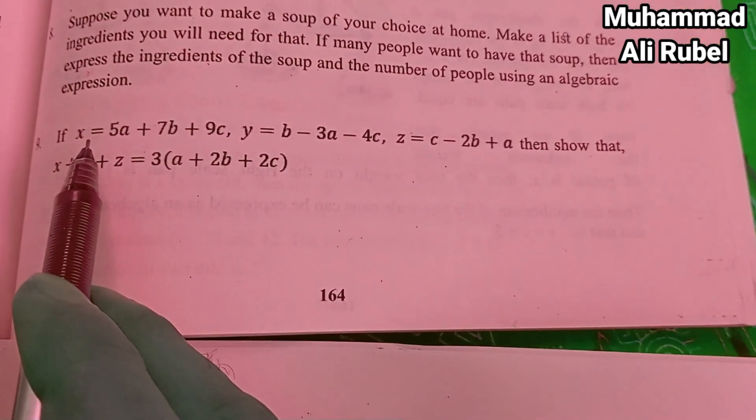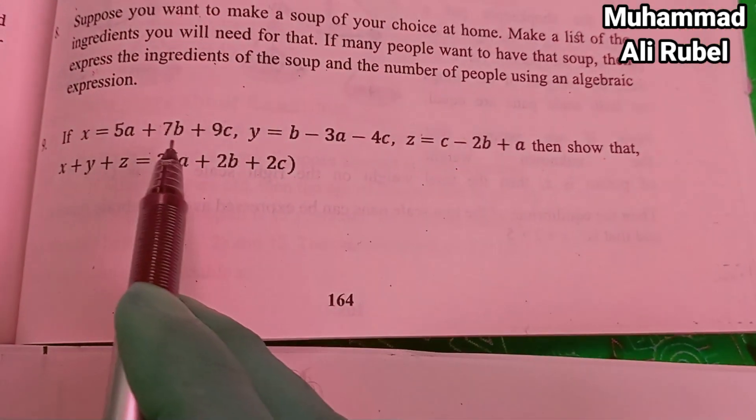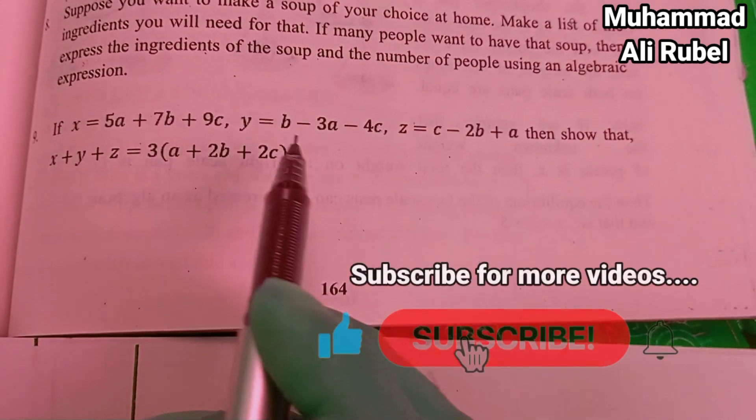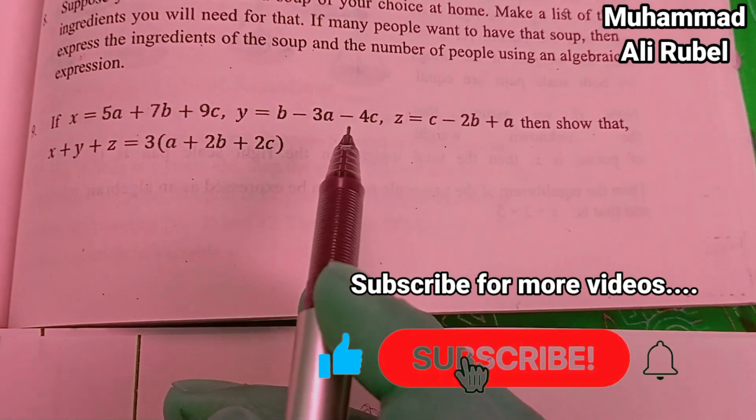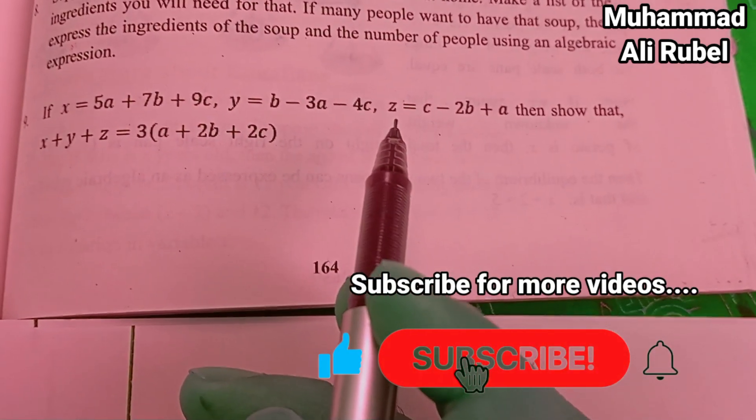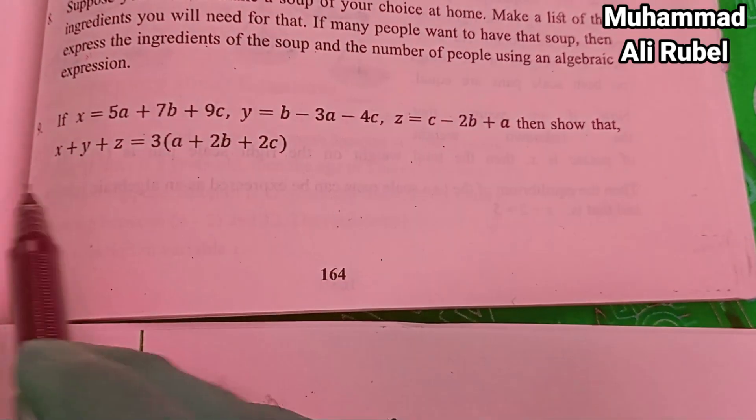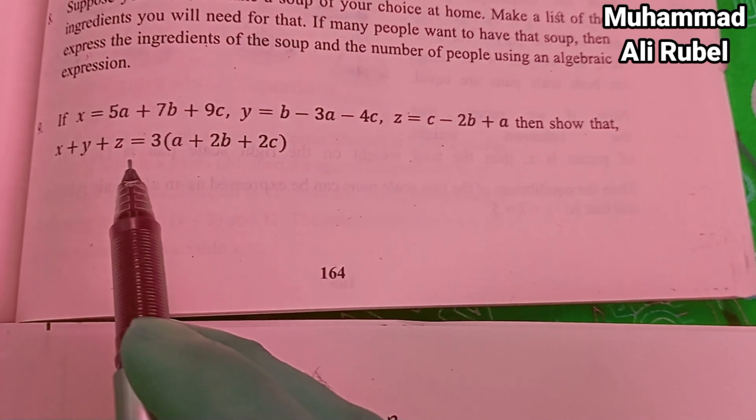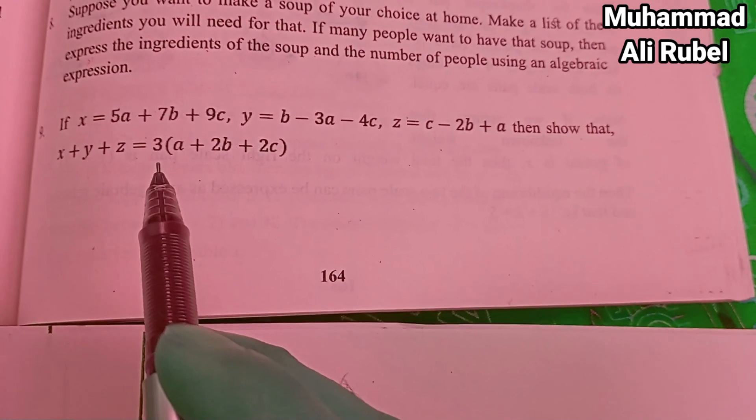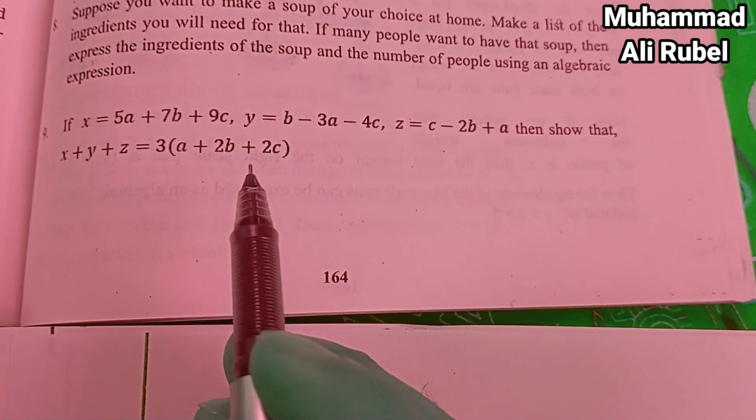If x equals 5a plus 7b plus 9c, y equals b minus 3a minus 4c, and z equals c minus 2b plus a, then show that x plus y plus z equals 3 times a plus 2b plus 2c.